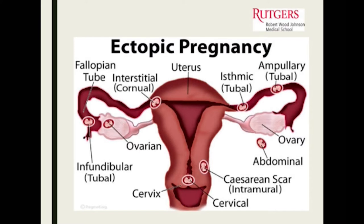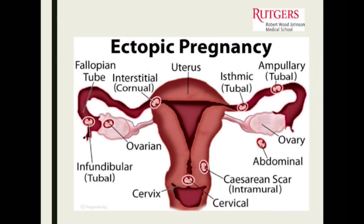All your reproductive-age women in front of you are pregnant until you prove them otherwise. The classic triad of symptoms a patient presents with is secondary amenorrhea, pelvic or abdominal pain, and vaginal spotting. Usually they don't come in with heavy vaginal bleeding in the setting of secondary amenorrhea.